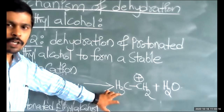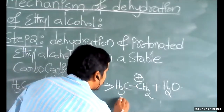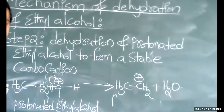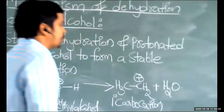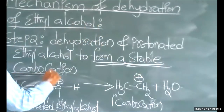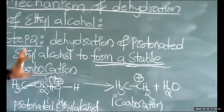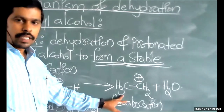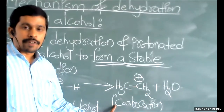What is the carbocation formed? CH₃–CH₂⁺, named as ethyl carbocation. That is an example of a first-degree carbocation. So the second step is the formation of a stable carbocation by dehydration of protonated ethyl alcohol. In step two, ethyl carbocation (CH₃–CH₂⁺) is formed — a first-degree carbocation — and a water molecule is also formed.